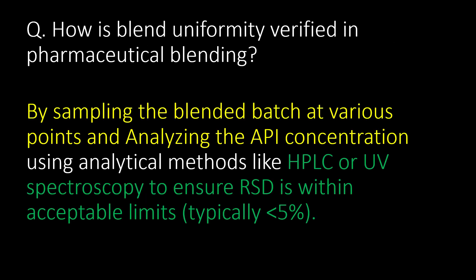How is blend uniformity verified in pharmaceutical blending? By sampling the blended batch at various points and analyzing the API concentration using analytical methods like HPLC or UV spectroscopy, to ensure RSD is within acceptable limits — typically less than 5%.